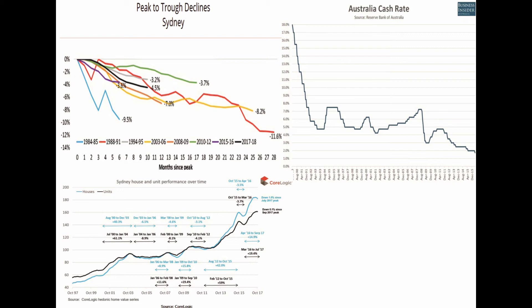From May 2015 to April 2016, the RBA kept interest rates at 2 percent. Property prices declined from October 2015 to April 2016 by roughly 3.5 percent. After another rate cut in April 2016, property prices began to rise again. The RBA decreased interest rates to 1.5 percent in August 2016, and property prices kept rising from April 2016 to September 2017 by 14.9 percent.